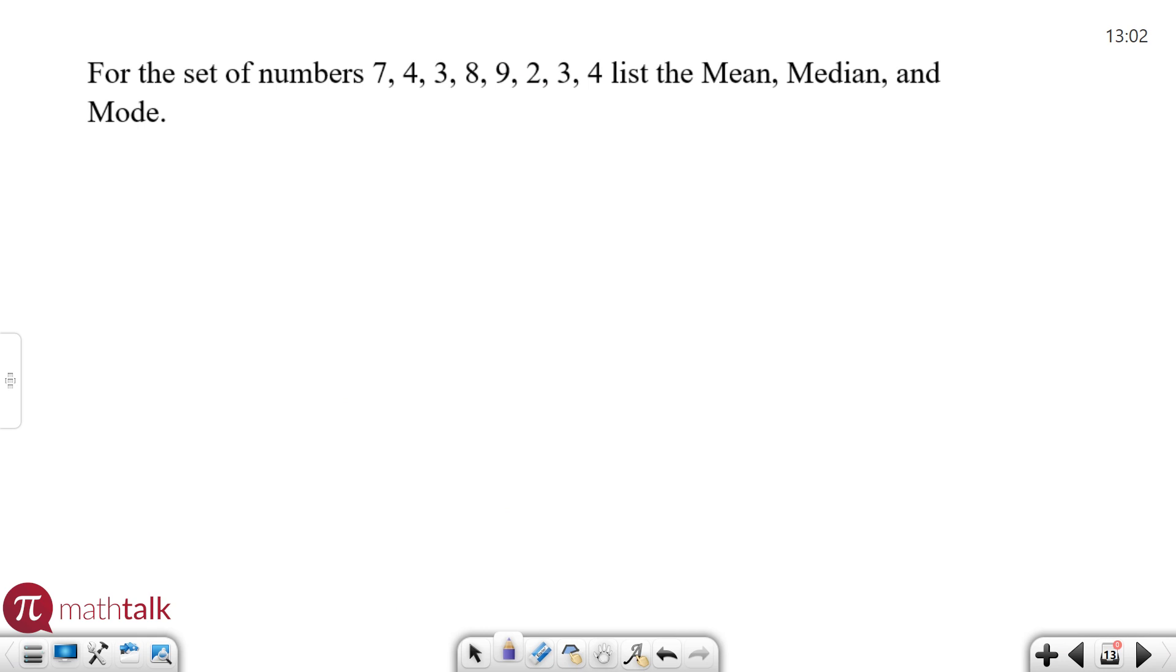For the set of numbers that are shown here, list the mean, median, and mode. Apparently mean, median, mode is part of the geometry section, but these are good problems to do. There actually are definitions of those on your formula sheet as well. Mean is average, which means I need to take all these numbers, add them up, and divide by however many there are. 7 plus 4 plus 8 plus 3, you add all those up, you're going to get 40. And there are 8 numbers in total, so 40 divided by 8 is going to be 5. So my mean or average is 5.